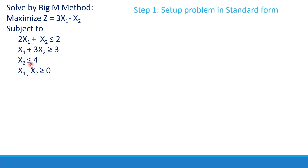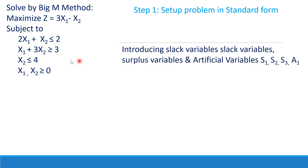Step one is our regular method: setting the problem into standard form. We introduce slack variables, surplus variables, and artificial variables. For the first constraint we add a slack variable; for the second we subtract a surplus variable and add an artificial variable; for the third we add a slack variable. So three slack variables and one artificial variable will be introduced into these constraints as well as into the objective function.